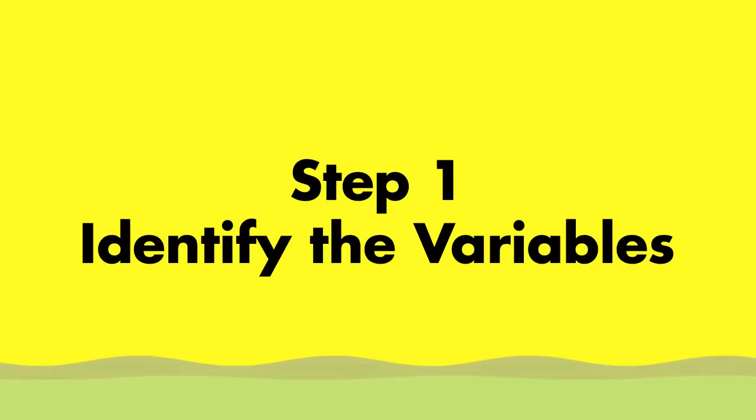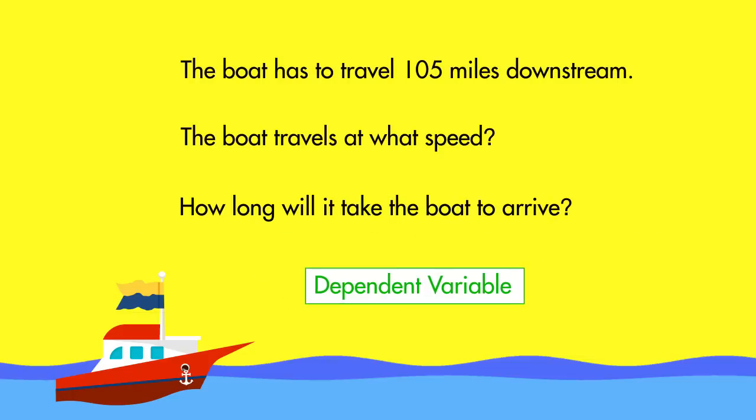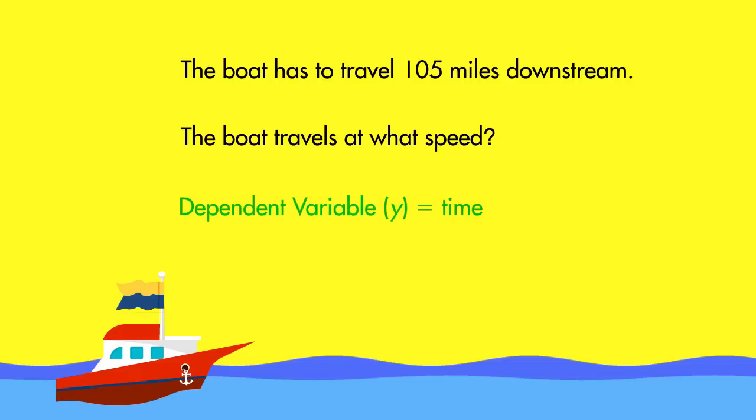To solve this problem, first identify the variables. The dependent variable is the value we are solving for. In this problem, our dependent variable is how long it will take the boat to travel the distance. The letter Y represents the dependent variable.